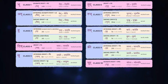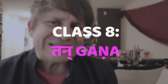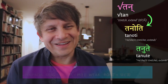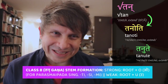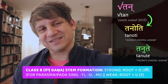Namo namaha and welcome back. In the last segment, we were looking at our fifth class, the su gana. Now it's time to turn to a very, very closely related class within our non-ganas, which is class eight, the tan gana. This gana is named after the characteristic root tan, which means to extend or stretch.